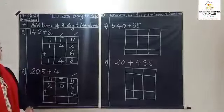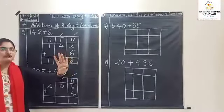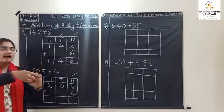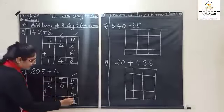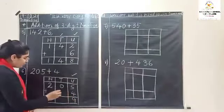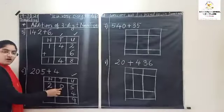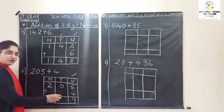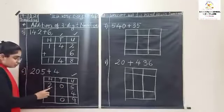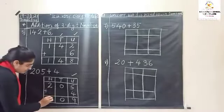Keep five in mind and remove four fingers. After five: six, seven, eight and nine. So the answer is nine. Five plus four is equal to nine. Zero plus zero means zero — nothing. Two — there is no digit here, so bring the same digit down.